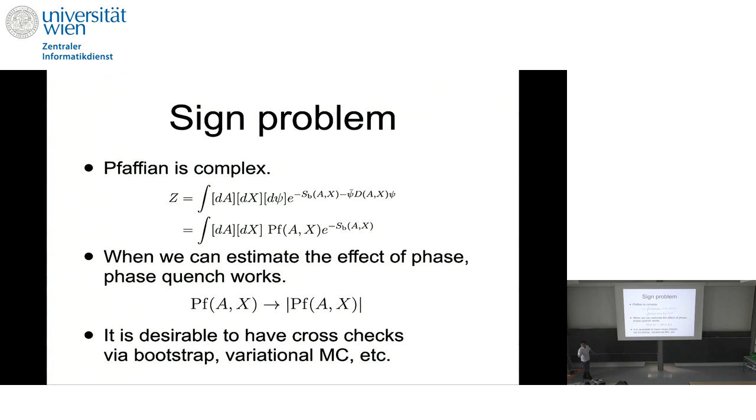But somewhat miraculously, in the case of this D0 matrix model, even if we replace this pfaffian with its absolute value, forgetting about phase, whenever we can estimate the effect of the dropping phase, we just see the same result. But whether we use the pfaffian or absolute value of the pfaffian, we get the same result, at least for energy. And we don't really know why this is the case.